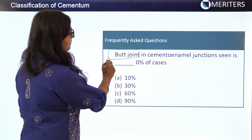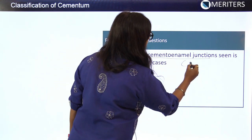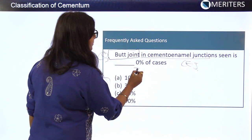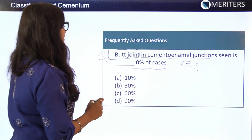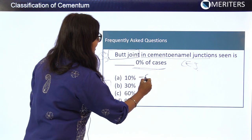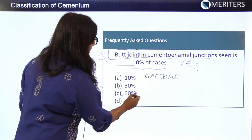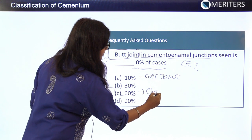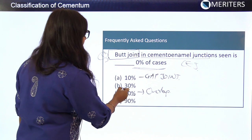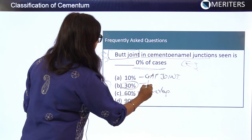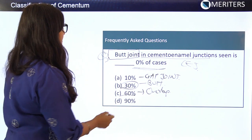MCQ: The butt joint at the cementoenamel junction is seen in what percentage of cases? Recall: 10 percent of cases show the gap joint, 60 percent show the overlap joint where cementum overlaps enamel, and 30 percent show the butt joint. Therefore, the answer is 30 percent.